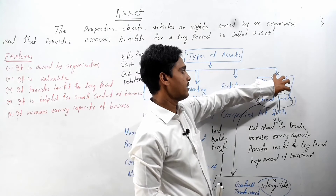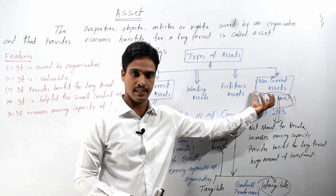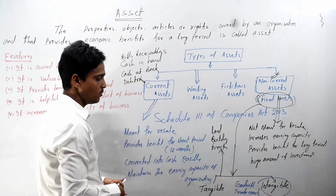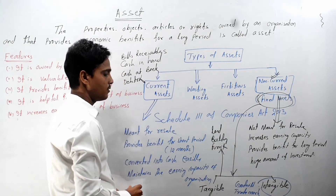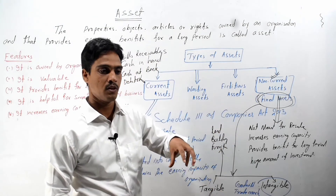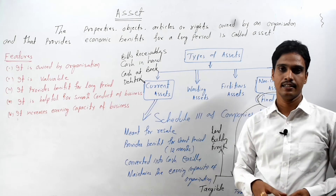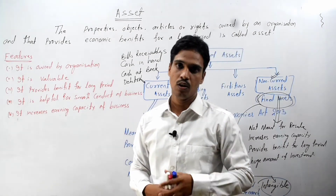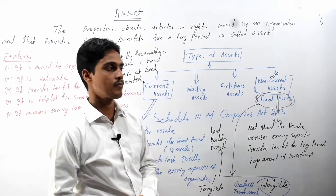To recap: non-current assets are those assets which are not a current asset, otherwise known as fixed assets, broadly divided into two types — tangible fixed assets and intangible fixed assets. Tangible fixed assets can be seen and touched, whereas intangible fixed assets cannot be seen and touched but can be felt by an organization.